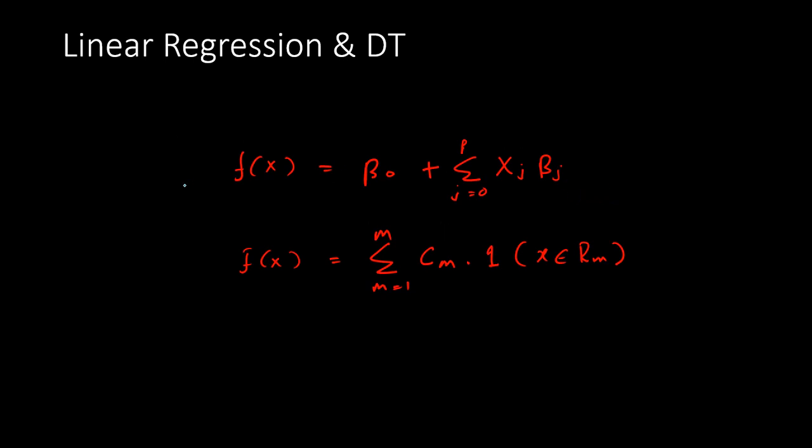Let us understand the theory briefly and we can do a comparison in a better way there. In linear regression, the functional form is very clear. Given a set of explanatory variable x, you are predicting the target variable y, and you can write it in a linear equation. This is a linear equation.